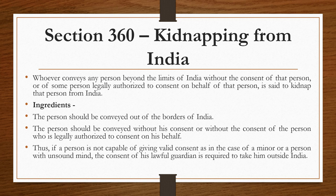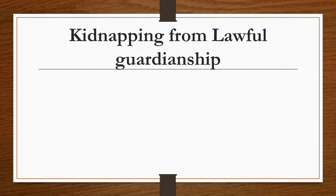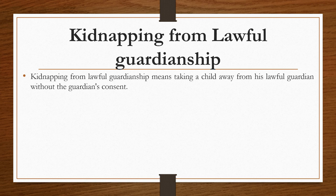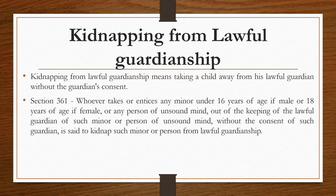Lastly, if a person is not capable of giving valid consent — as in the case of a minor or a person of unsound mind — the consent of the lawful guardian is required to take him outside India. The next type is kidnapping from lawful guardianship, described under Section 361 of IPC. This means taking a child away from his lawful guardian without the guardian's consent. According to Section 361, whoever takes or entices any minor under 16 years of age if male, or 18 years if female, or any person of unsound mind out of the keeping of the lawful guardian without the consent of such guardian is said to kidnap.